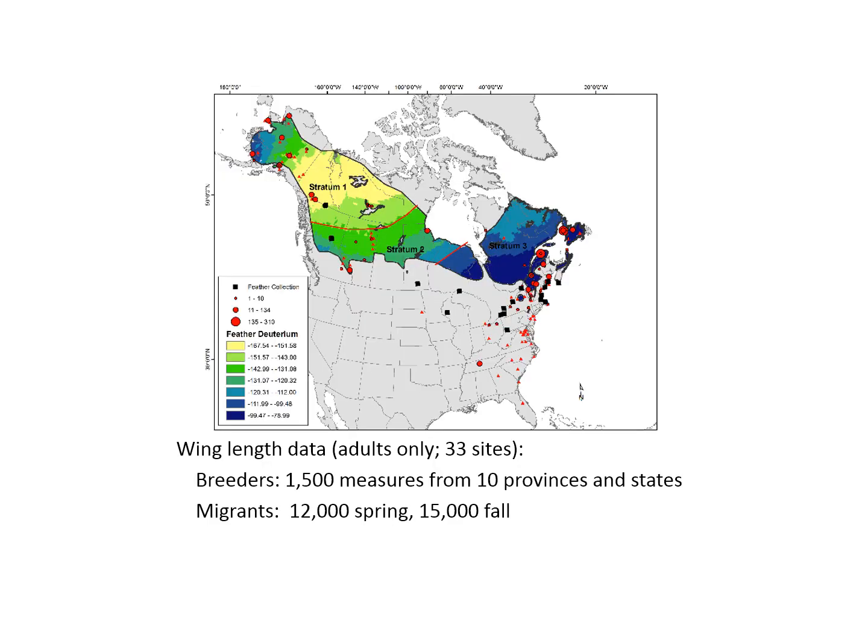I won't talk much about the wing length data per se, but we had over 25,000 wing length measurements largely from migration stations but also from across the breeding area. These data proved very useful in helping us separate birds from Alaska that have isotope signatures also found in the east.